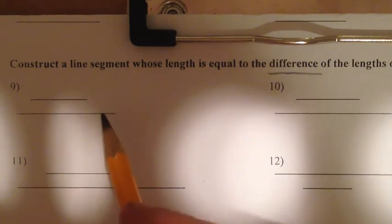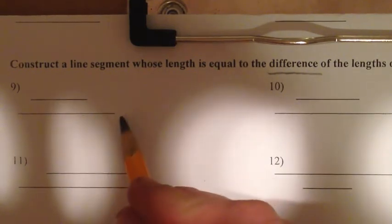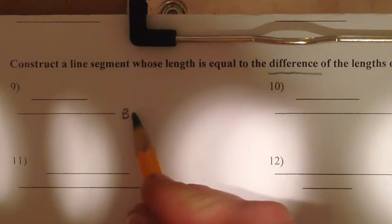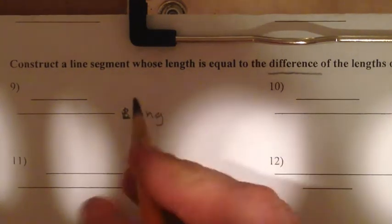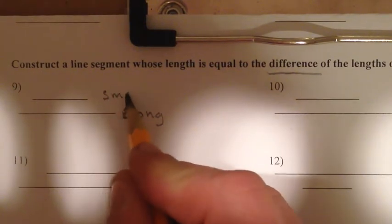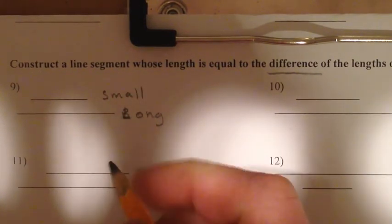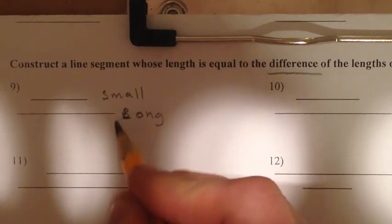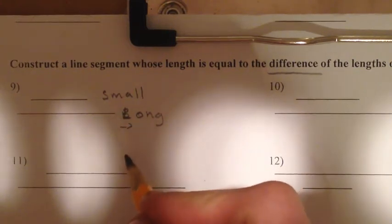Now the difference of two things - we don't really have negative when we're talking about lengths, so we're going to take the bigger one. Let's call it the long one, and we're going to subtract the small one from that. So how do we do that? Well, the idea is instead of going forwards, instead of putting more on it, we're going to take some off. We're going to go backwards.